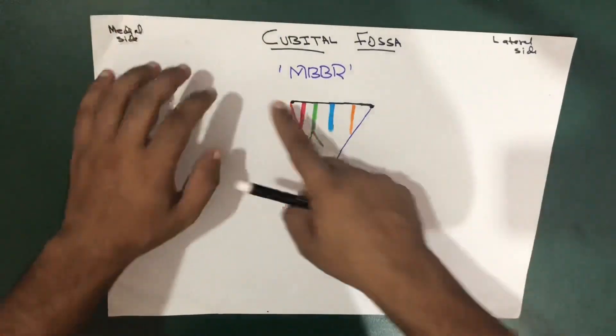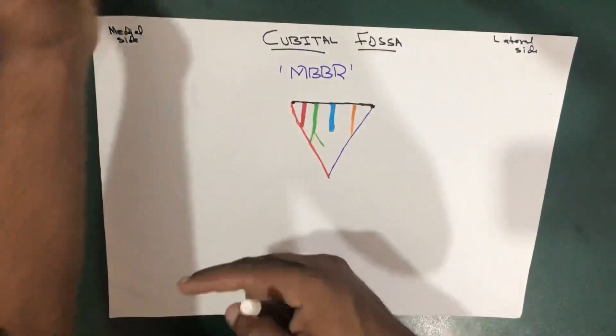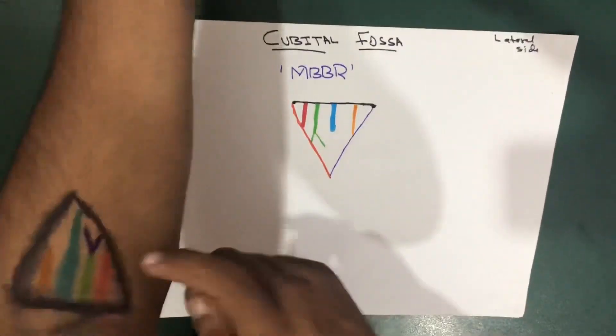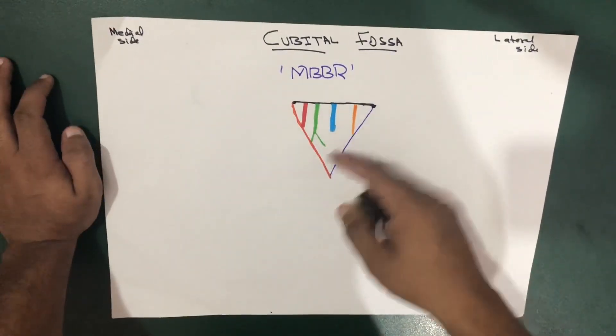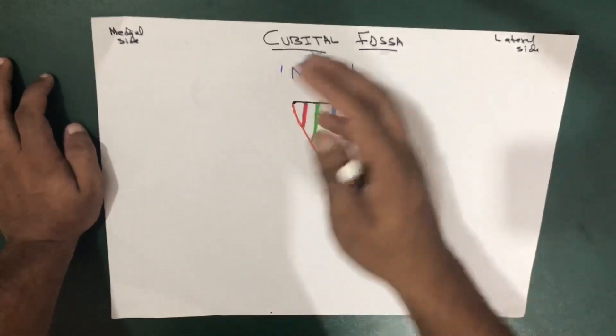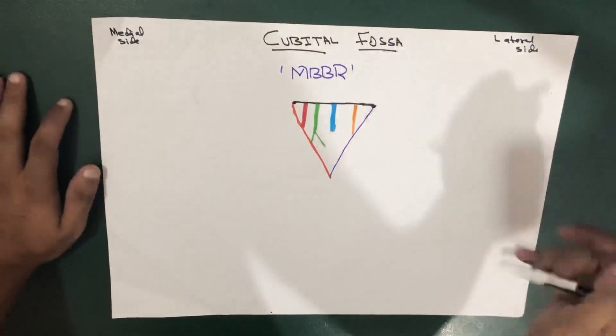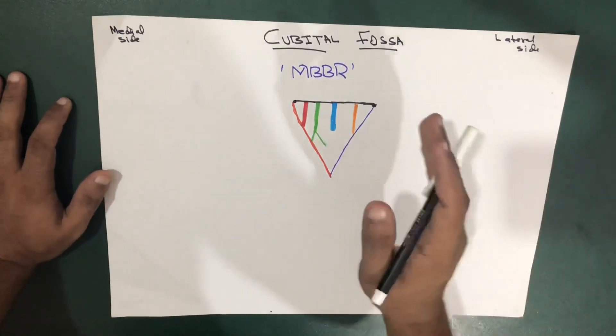Remember that the cubital fossa is a triangular depression on the front of the elbow, and it has its contents and boundaries. We are going to take a deep look into each of these things.